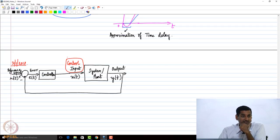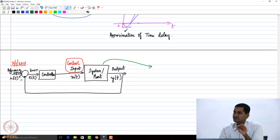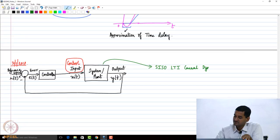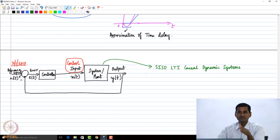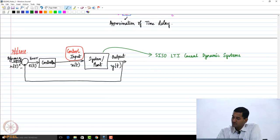Right now, where we are is the following: we are in the system block. The class of systems we are considering are SISO — Single Input Single Output — linear time-invariant, causal dynamic systems. I am just recapping the big picture because after these many lectures, we need to see where we are. That is my objective to begin with today.